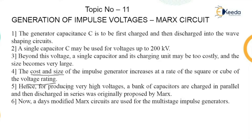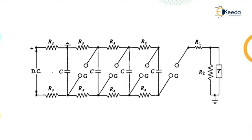Hence for producing very high voltage, a bank of capacitors are charged in parallel. The charging is done in parallel and the discharging is done in series. That is what is proposed by the Marx circuit. In fact, there is a modified Marx circuit available for the multi-stage impulse generator.